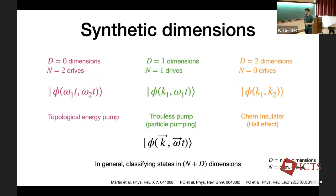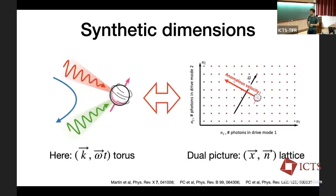This whole formalism is straightforwardly generalized to classifying states in n+d dimensions, with d spatial dimensions and n synthetic dimensions arising from the drives. There is a dual picture to the k-ω-t torus: one can fully Fourier-transform the problem into real space and so-called synthetic dimensions, where one finds a hopping problem and associates hops in those synthetic dimensions with the exchange of photons between the system and the drives.